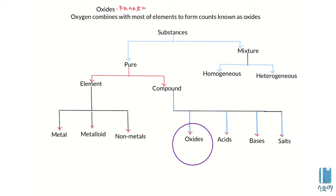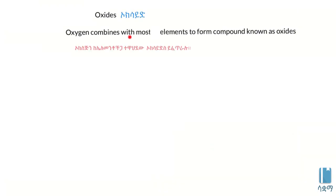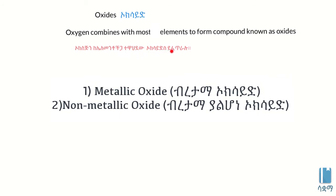Oxygen combines with most of the elements to form a compound known as oxides. The elements are made of oxides. Oxides are made when metals are made of oxides.